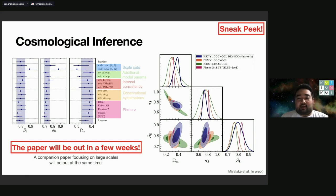This is the result we got. Compared to the DES Year 1 and the KIDS data, we got a comparable constraint even after very conservative cuts for the spectroscopic galaxies. The paper will be out in a few weeks, so stay tuned.